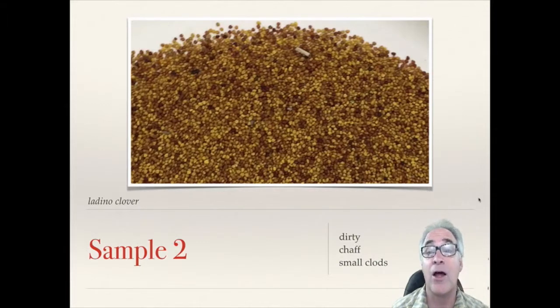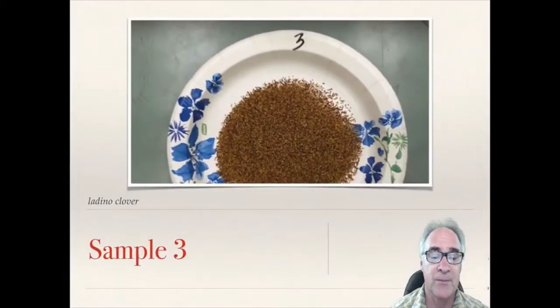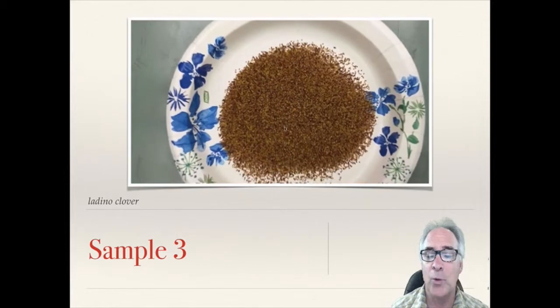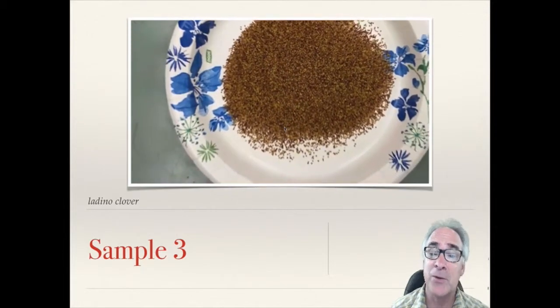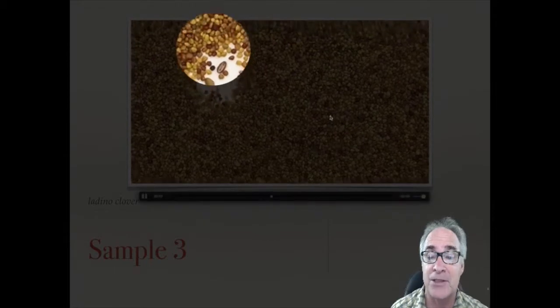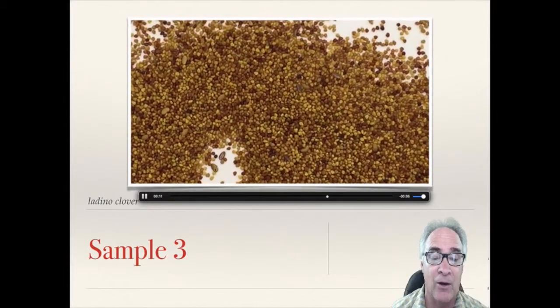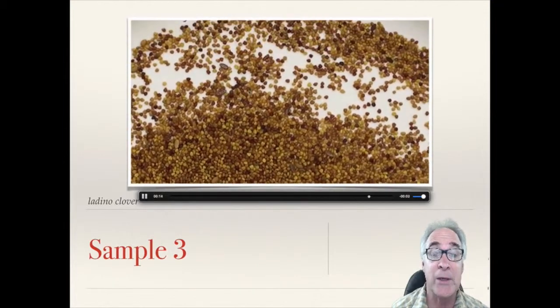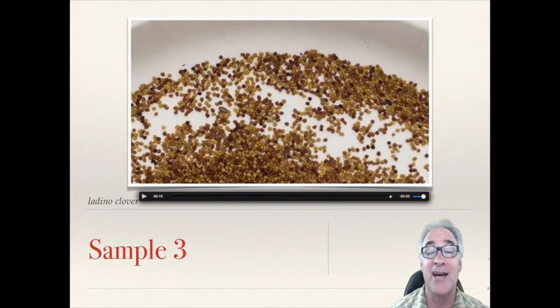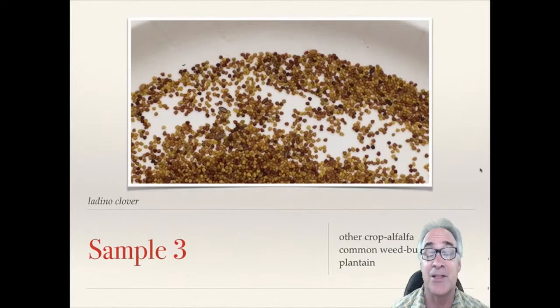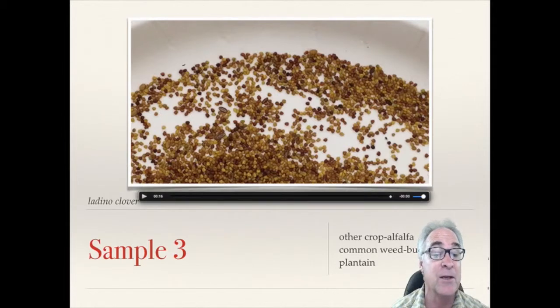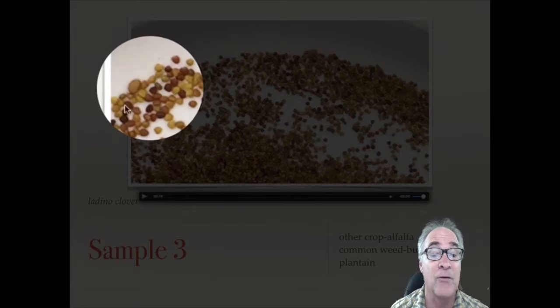Let's look at number three. You really can't see much of anything until we kind of zoom in on it. All of a sudden what happens is these little boat-like shaped seeds appear. As we look at this sample, it's got all kinds of things in it. Two things that I noticed: number one has some other crop, and that other crop, that larger kidney-shaped seed right here, that is alfalfa.